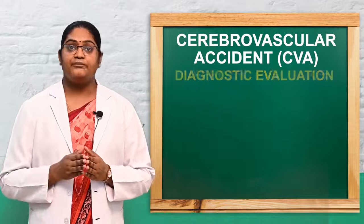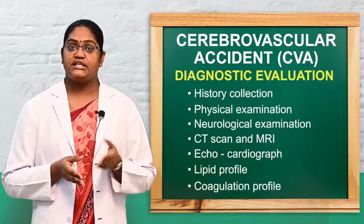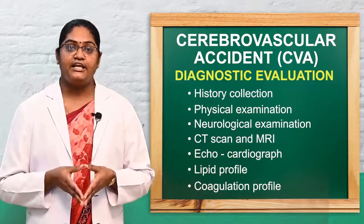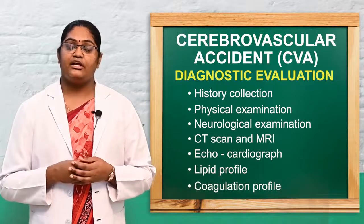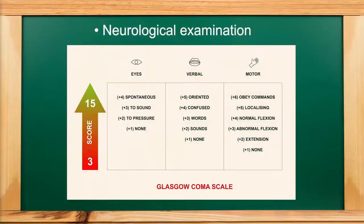Diagnostic evaluations include history examination, physical examination, neurological assessment, CT scan, MRI, lipid profile, coagulation profile, and echocardiography. Under neurological examination, we perform the FAST assessment and the Glasgow Coma Scale. The Glasgow Coma Scale is an important assessment used to analyze the conscious or unconscious level of the patient and the stability of neurological function.